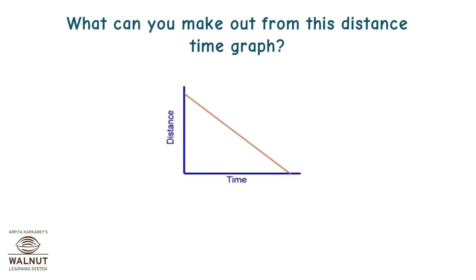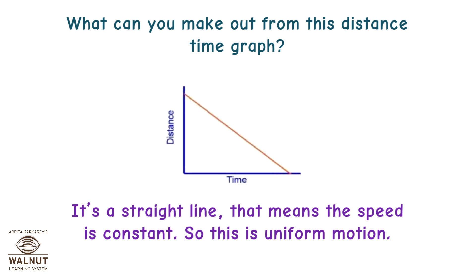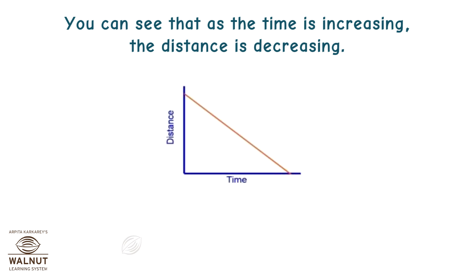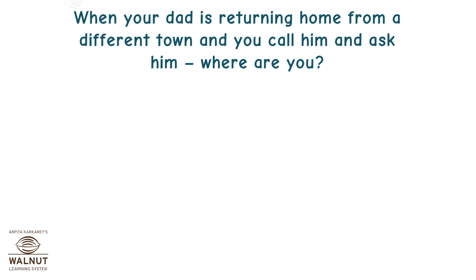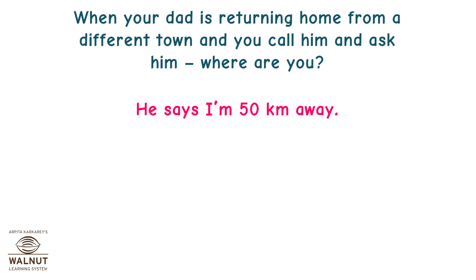What can you make out from this distance-time graph? It is a straight line — that means the speed is constant, so this is uniform motion. You can see that as the time is increasing, the distance is decreasing. What does that mean? When your dad is returning home from a different town and you call him and ask, where are you?